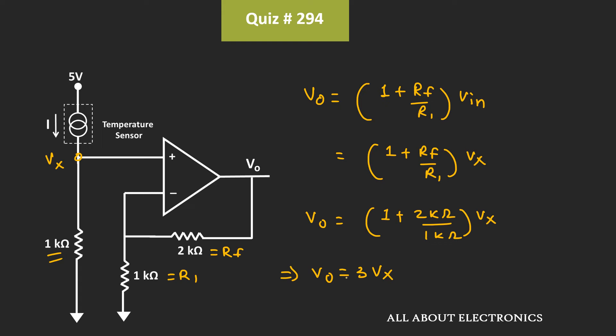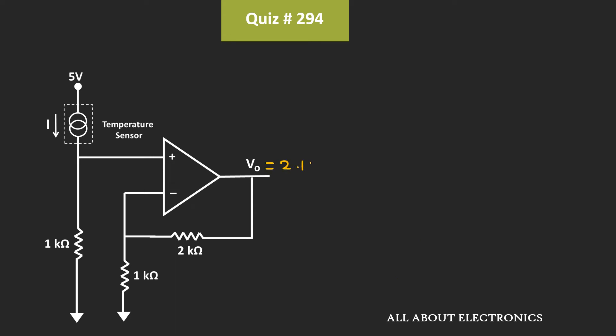Now, here we have been given that, the output voltage of the op-amp is equal to 2.1 V. That means, 2.1 V is equal to 3 times Vx. Or, Vx is equal to 0.7 V. That means, whenever this Vout is equal to 2.1 V, at that time, this Vx is equal to 0.7 V.